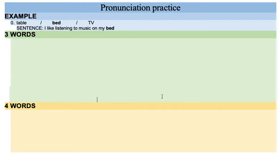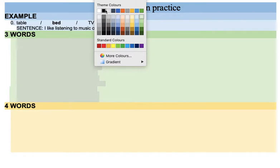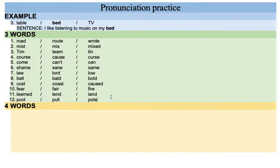Let me show you the words. Alright, there you are. So now this one here is road. This one is root. And this one is wrote. The main difference between road and wrote is the end — road ends with D, and wrote ends with T.